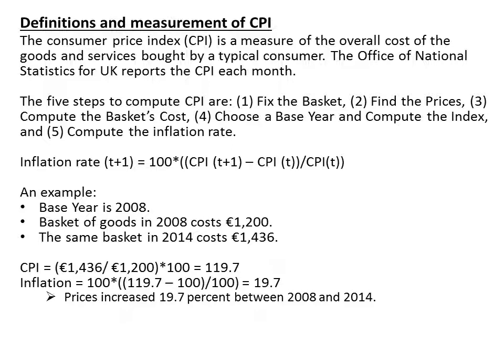Just to refresh your memory: first, it is essential to fix the basket — that is, to know which goods and services a typical family in the UK normally buys. These are weighted, so we consider the percentage of income spent on good X and the percentage spent on good Y. Then, for all these goods that UK families buy, we define and find the prices. Then we compute the basket cost, which is essentially multiplying quantities by prices and adding up all these costs.